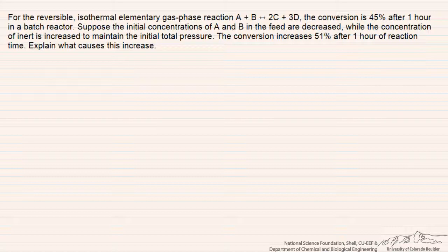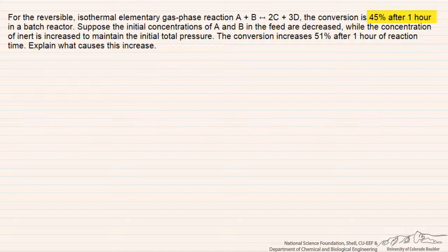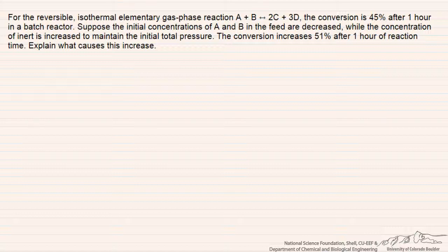This problem deals with a reversible isothermal elementary gas phase reaction where we have more moles of product than moles of reactant, and we're doing this reaction in a batch reactor. Initially the conversion is 45%, but then, maybe somewhat counterintuitively, as we decrease the concentration of the reactants for this elementary reaction, we actually get to a higher conversion of 51% in the same amount of reaction time. The question is: what caused that increase in conversion when we decreased the concentration, which would decrease the frequency of collisions between molecules A and B?